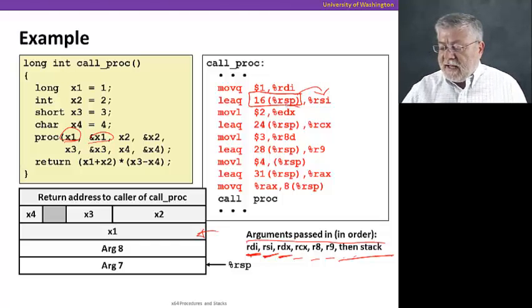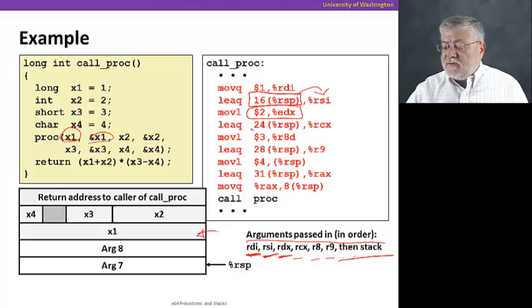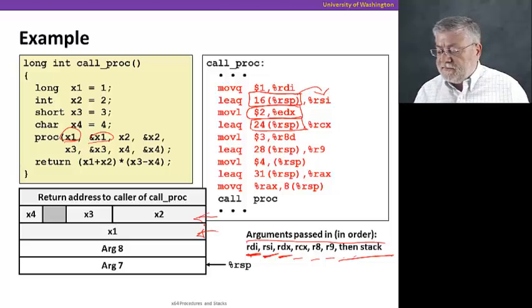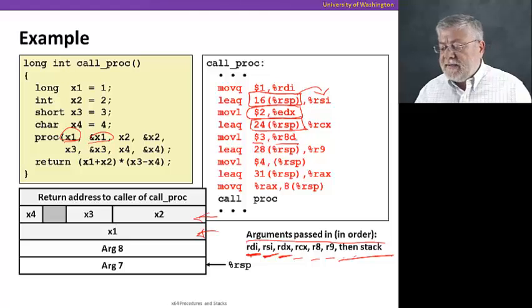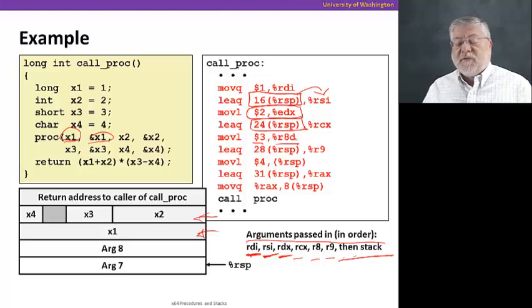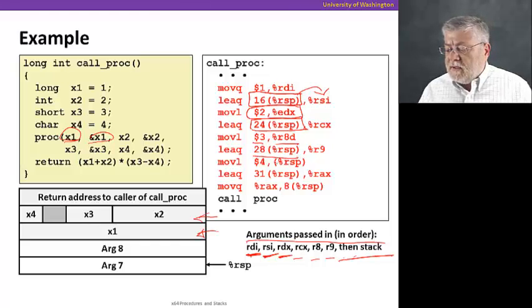Then we'll put value two into EDX for the third argument, and the address of that value, which is at 24 plus RSP into RCX, that address for X2. Then we'll move a three into R8D. That's just the four bytes, the low order four bytes of R8. That's how we refer to it. And then put that address of X3 into R9, our sixth argument. 28 plus RSP is the address of this byte right here.